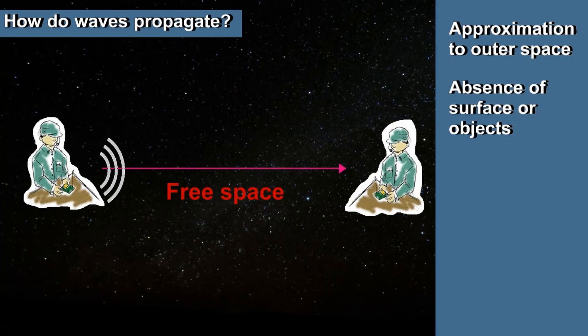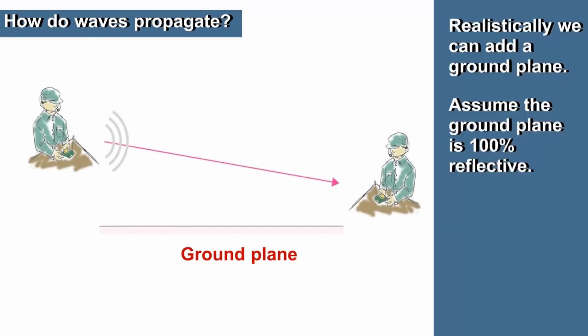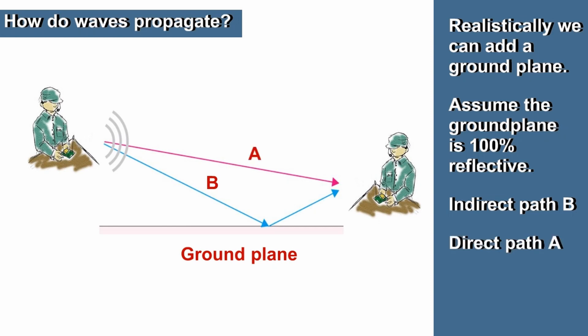We can define free space as a close approximation to outer space, meaning the absence of any surface or objects that could interfere with the waves. To simulate this, we can imagine a transmitter and receiver in such space. Since communication in free space does not occur realistically, the next step is to imagine taking the free space and adding a large ground plane into it. We will assume the ground plane reflects all radio waves that hit it. Note that the receiver will also see a wave arriving on the second path — let's call this B — in addition to the wave on the direct path, which we can call A.